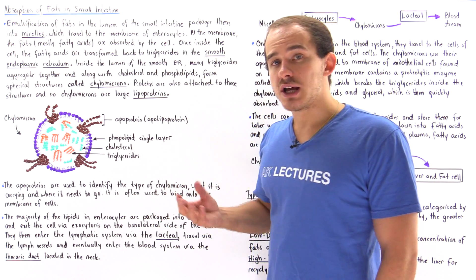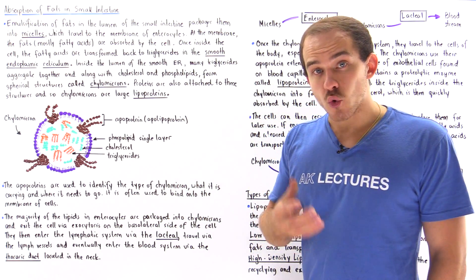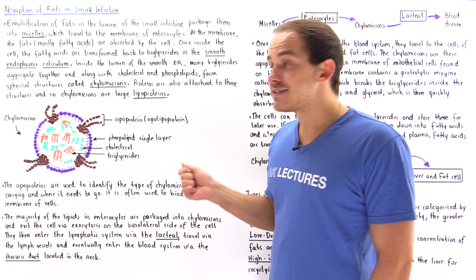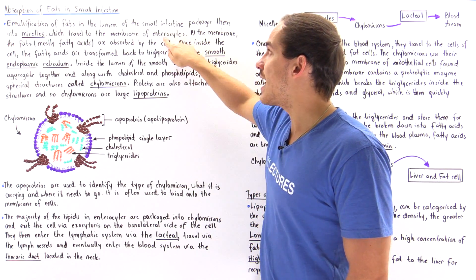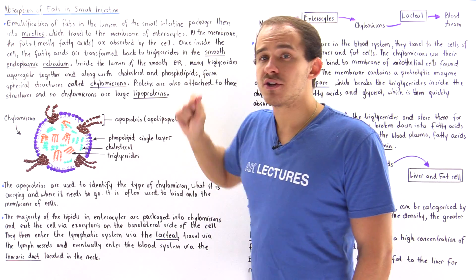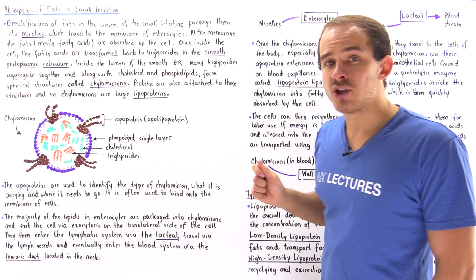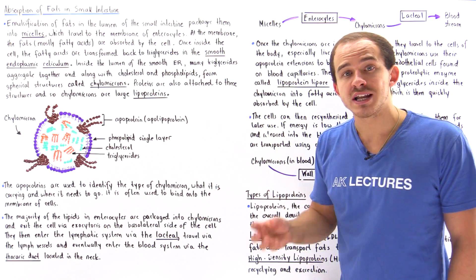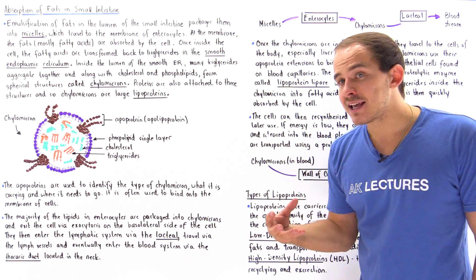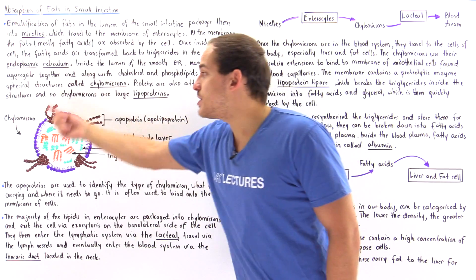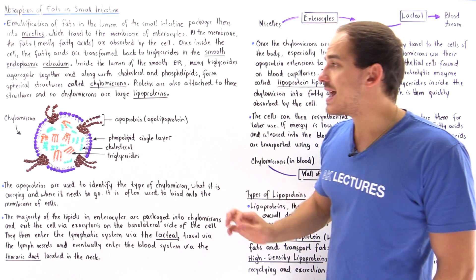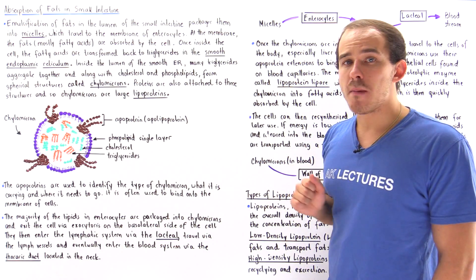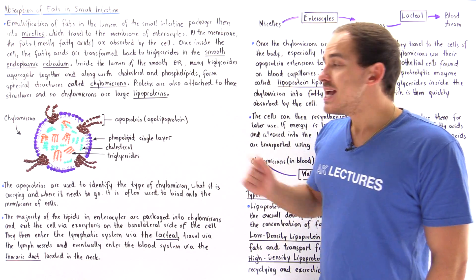The majority of the fats inside the enterocytes, inside the cells of the small intestine, are stored and packaged in particles known as chylomicrons.